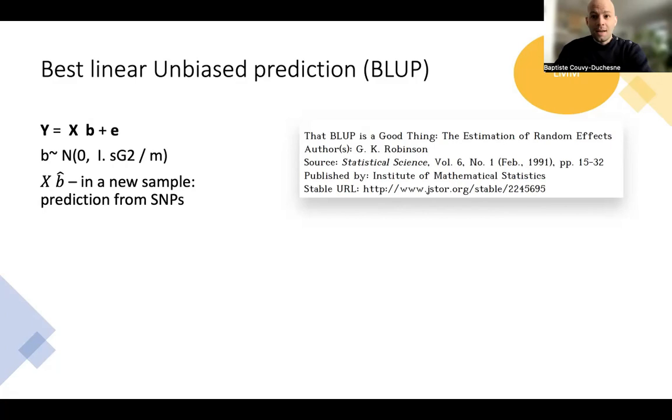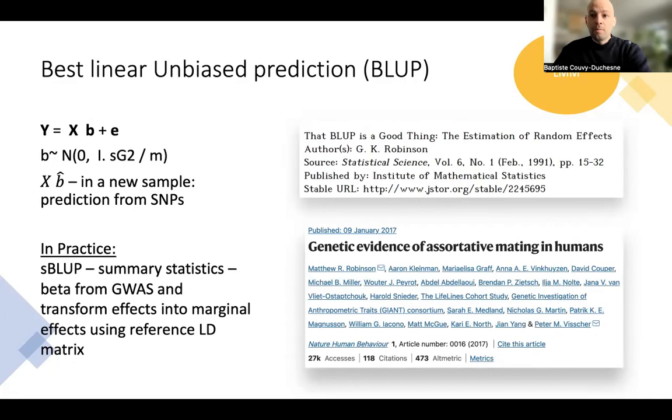In practice, we estimate BLUP from summary statistics, which is called SBLUP. We take the betas from the GWAS. The SBLUP method allows to transform those effects into marginal effects B by using a reference LD matrix. And then once we have those B hat, we can apply them to a new sample to derive a prediction from the whole genome.